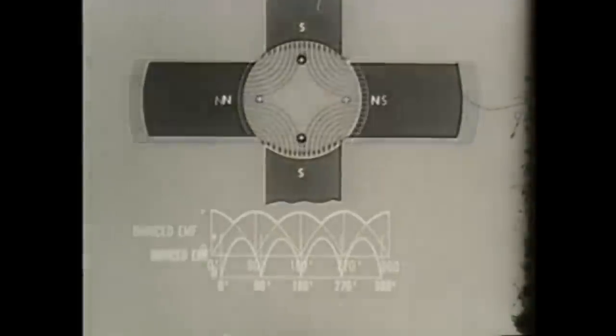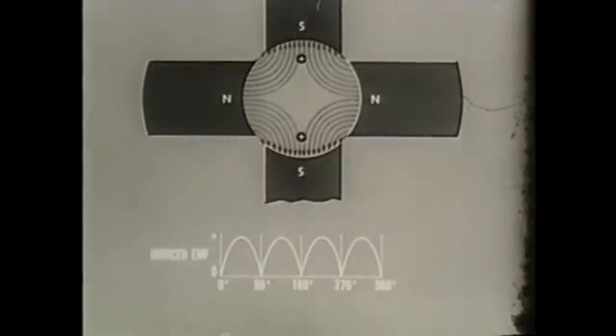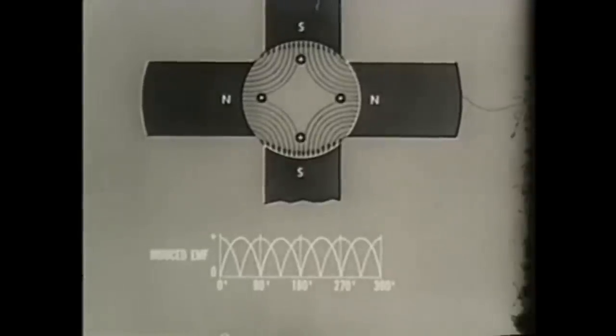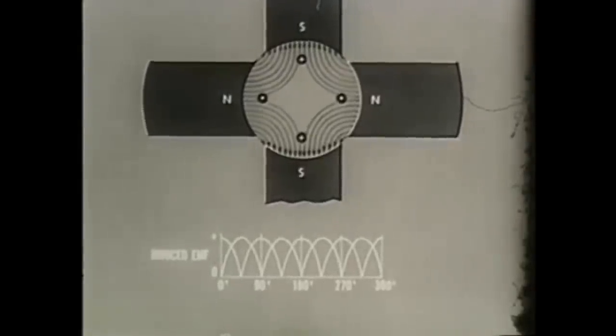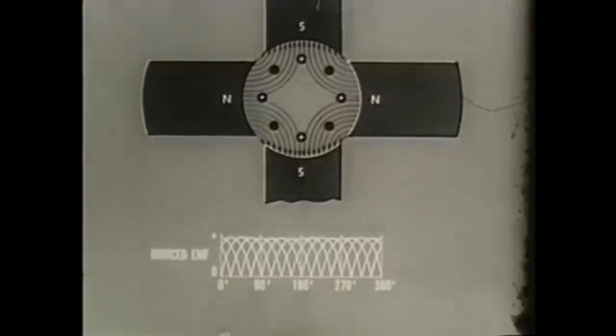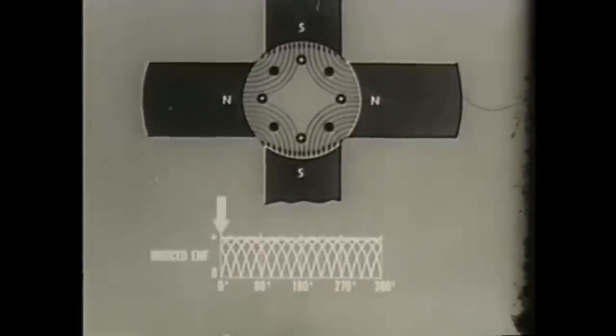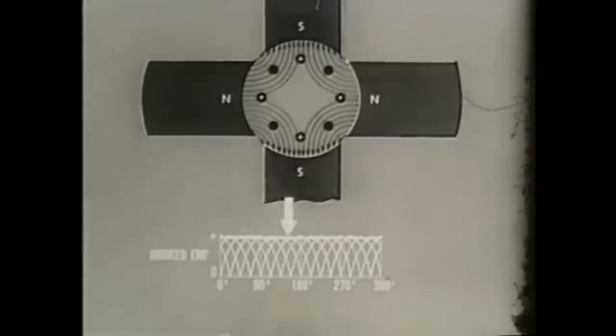By adding magnets, we increase the number of fields cut by the armature. As we increase the number of loops and commutator segments, the variation between maximum and minimum value decreases. This, in effect, tends to flatten the DC output.